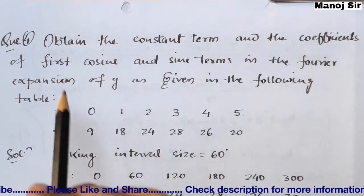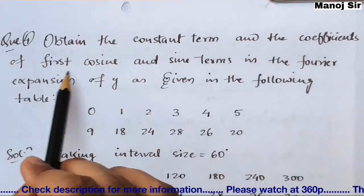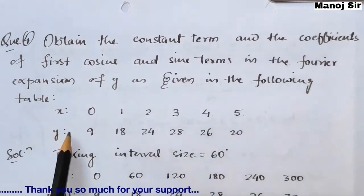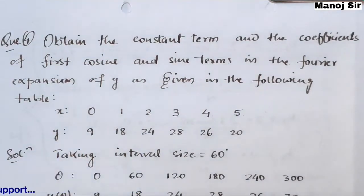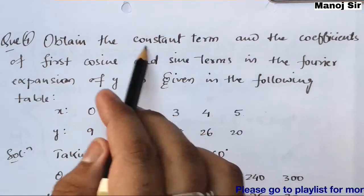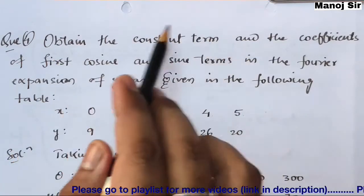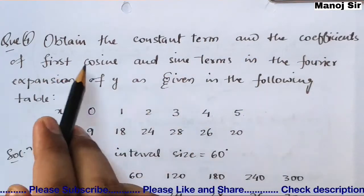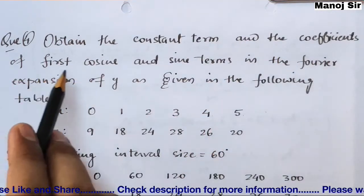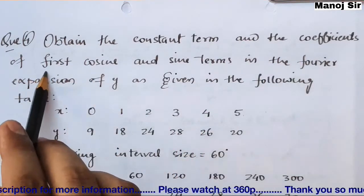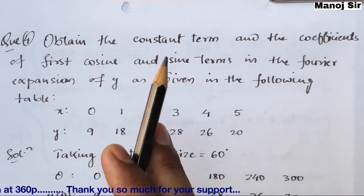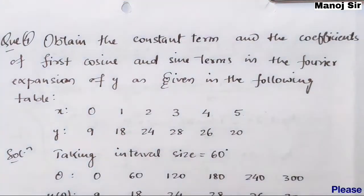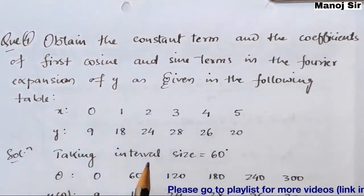The question says: find the constant term and the coefficients of the first cosine and sine terms in the Fourier expansion of y as given in the following table. So we need to obtain the constant term, which means a₀, the coefficient of the first cosine term which is a₁, and the coefficient of the first sine term which is b₁. These are the three things we need to find.